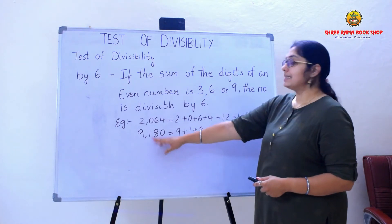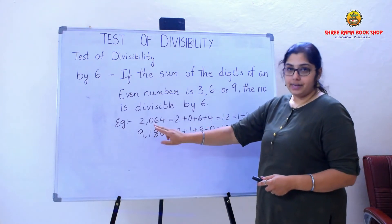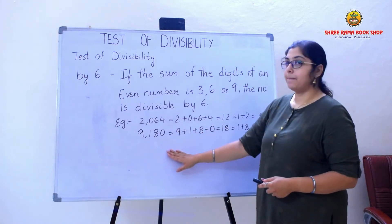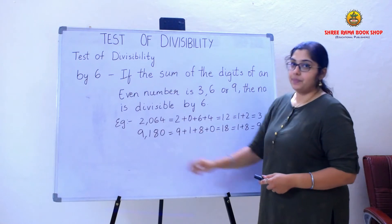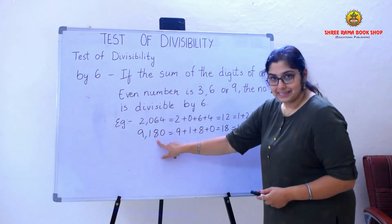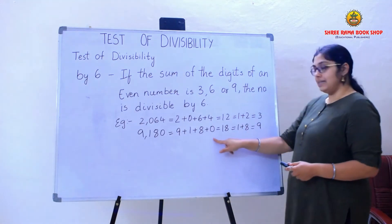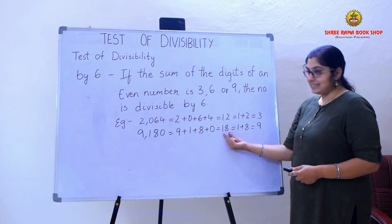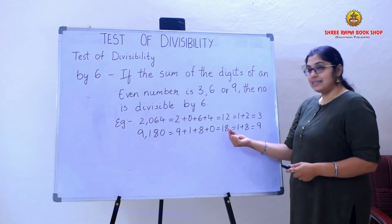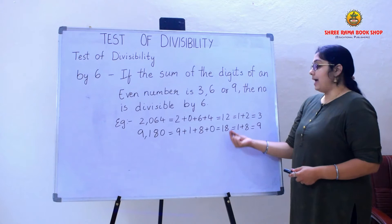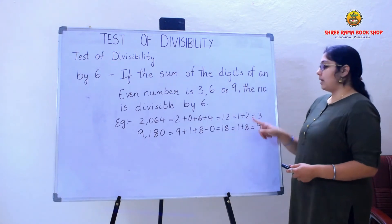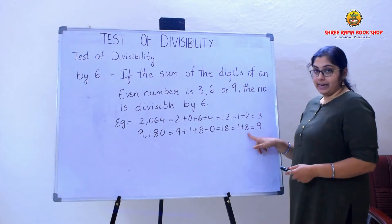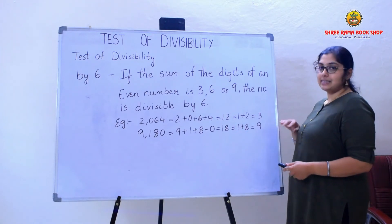The second example is 9,180. I am going to add all the digits of this four-digit even number: 9 plus 1 plus 8 plus 0. After adding all the digits, I got the answer as 18. Again, this is a two-digit even number, so I am going to add it again: 1 plus 8. The sum is 9.